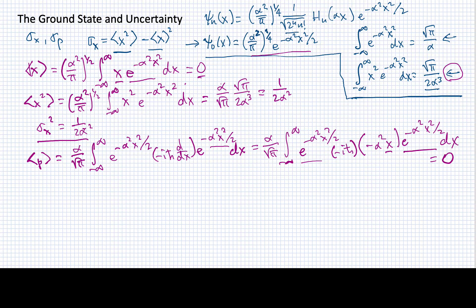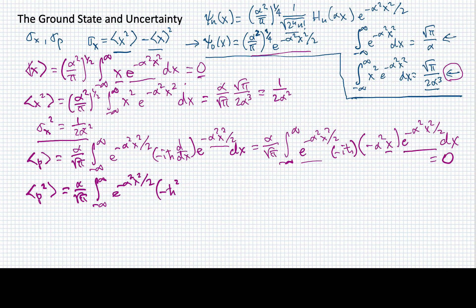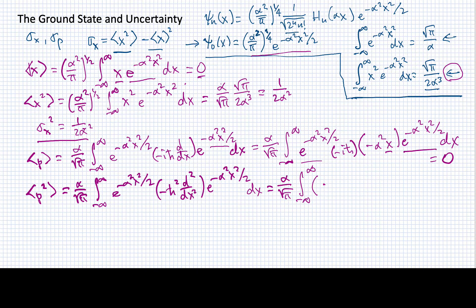That makes sense because the harmonic oscillator is a symmetric potential, and it's just equally likely for the momentum to be traveling in the positive direction as the negative direction. For p squared, I'm going to have alpha over the square root of pi, the integral from minus infinity to infinity of e to the minus alpha squared x squared over 2, times minus h-bar squared times the second derivative of the Gaussian. Executing that second derivative gives a factor of alpha to the fourth x squared minus alpha squared, times e to the minus alpha squared x squared dx.